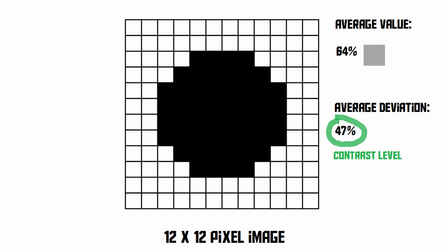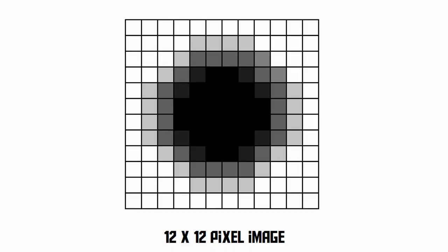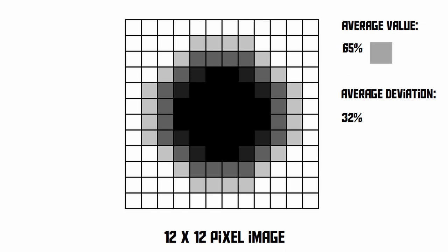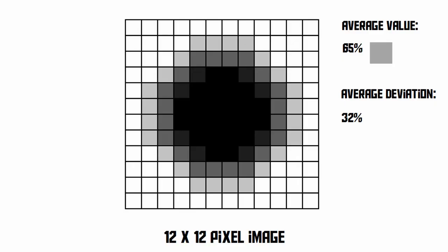For now that's quite a meaningless number because we haven't seen what these numbers are like for other images, so let's look at another one. This version of the image is almost the same but the edges are blurry, as if taken with a camera that was out of focus. If we do the same calculation again, we get an average of 65% — slightly different, probably because the image wasn't drawn perfectly. The average deviation this time is 32%, quite a bit lower, which means the contrast in the second image is lower than in the first — which is correct because the second image was more blurry.